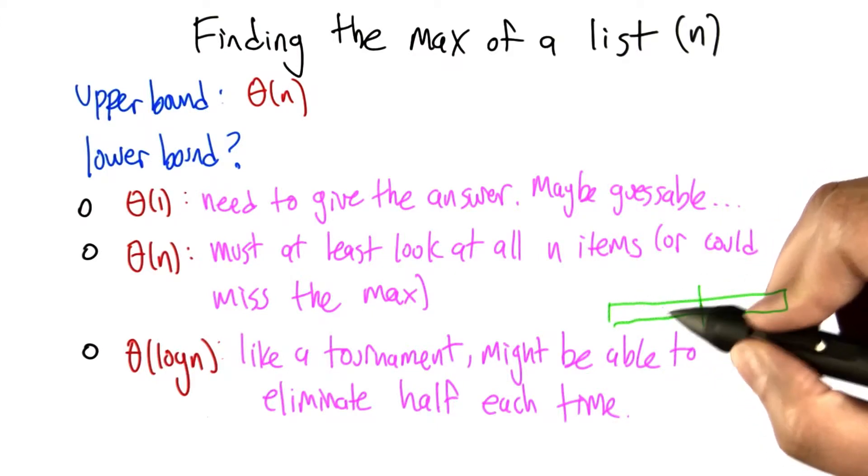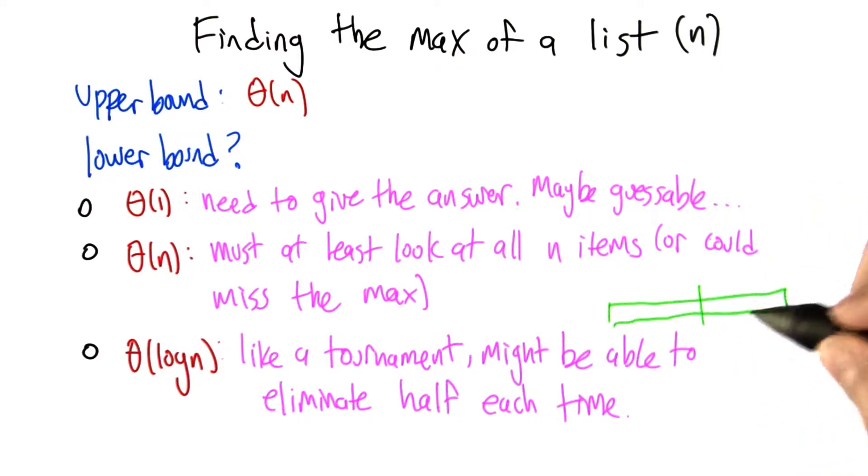Ask some group of processors to compute the answer for this half of the list and some other group of processors to compute the answer for this half of the list. And then you only have to do one comparison to find the max.